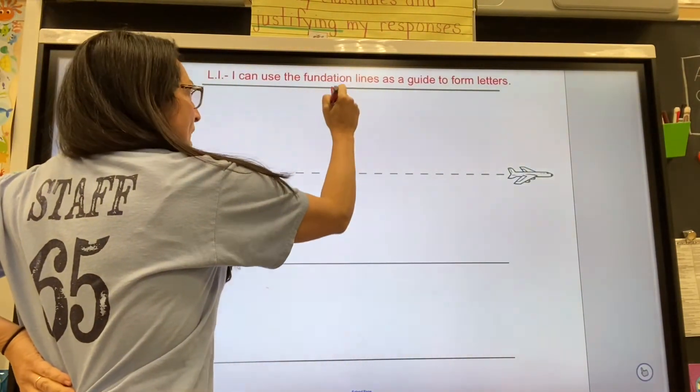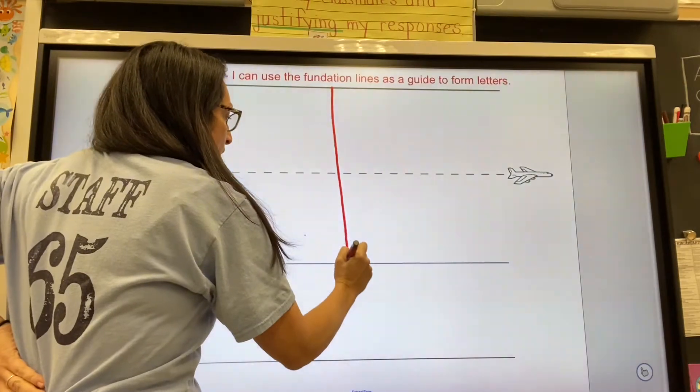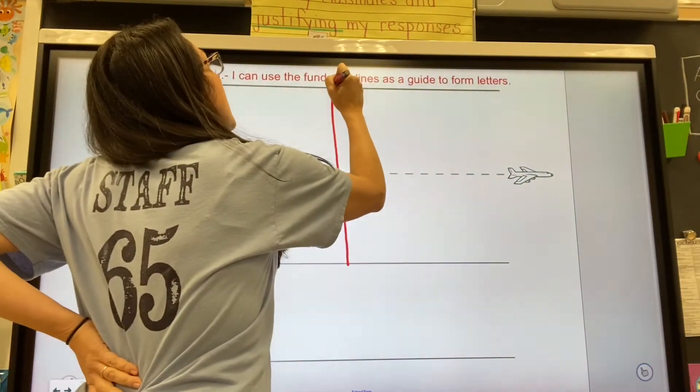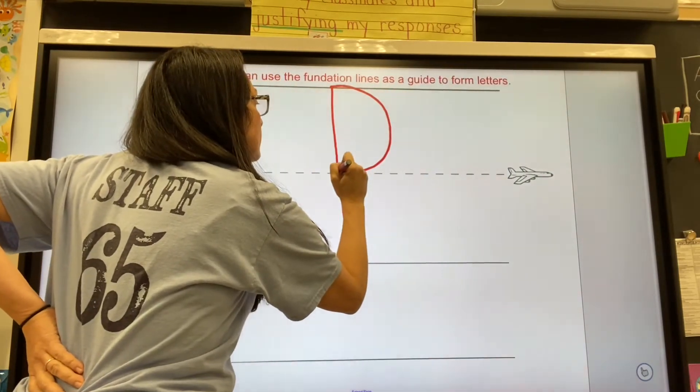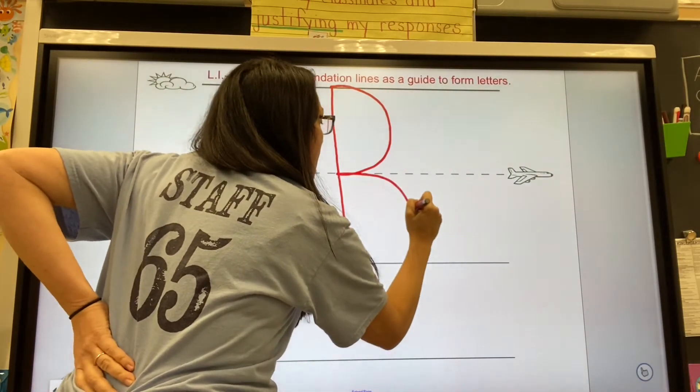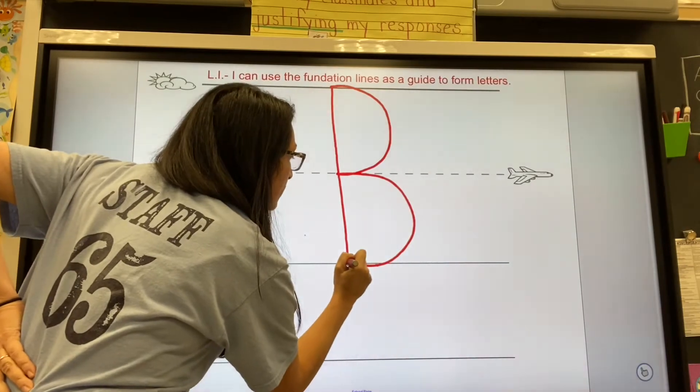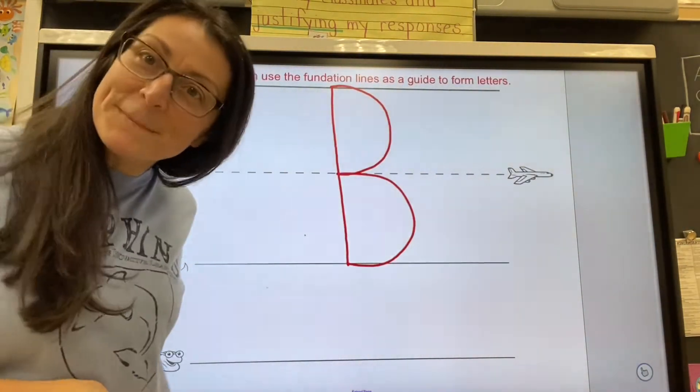Skyline! Down to the grassline. Take your hands up. Skyline! Bubble out to the plane line. Bubble out to the grassline. Done! The B has two bubbles.